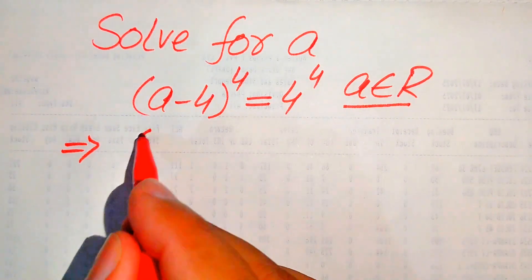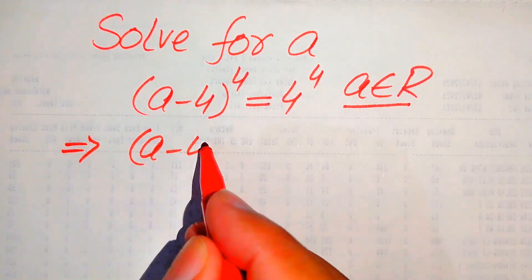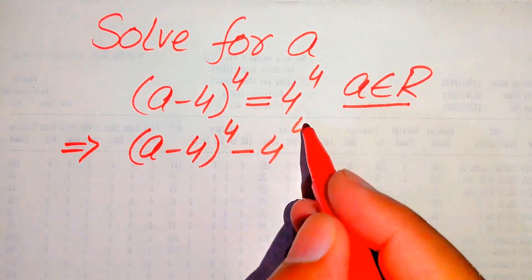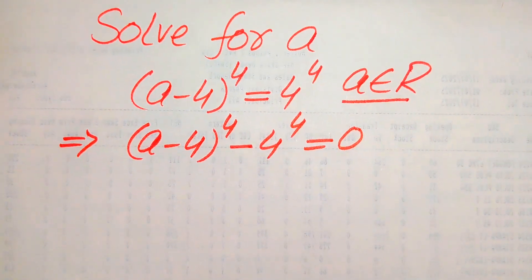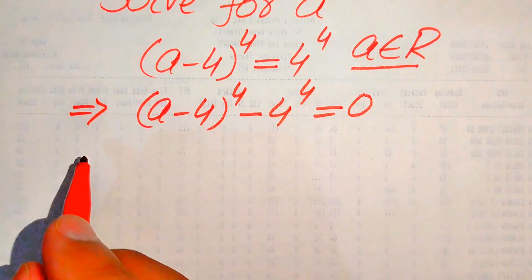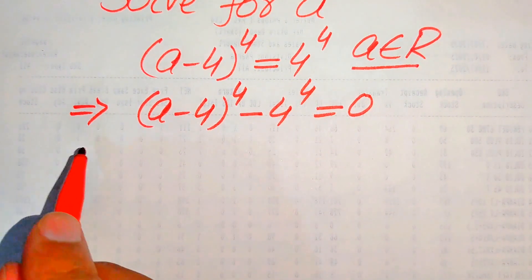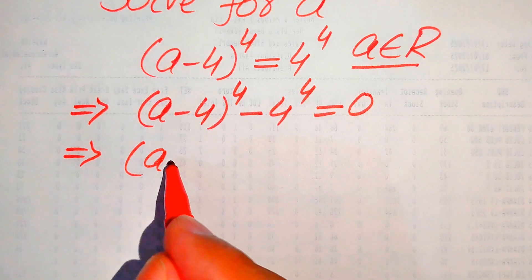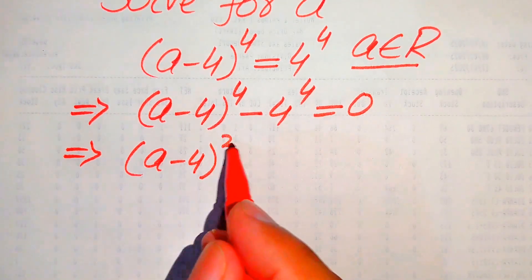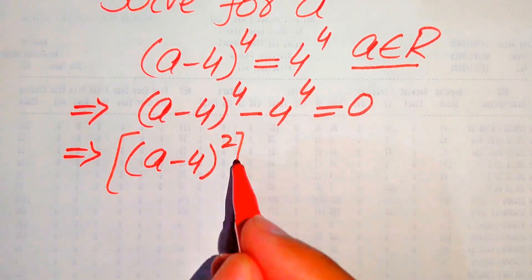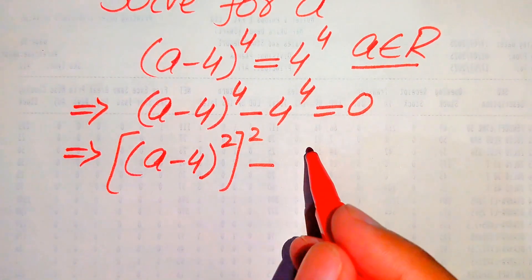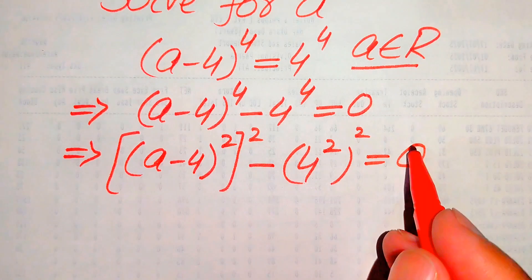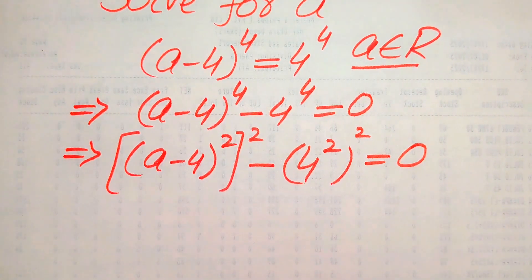The first step is to move 4 to the power of 4 to the left-hand side, giving us (a-4)^4 minus 4^4 equals 0. We then rewrite this as (a-4)^2 whole squared minus (4^2) whole squared equals 0.